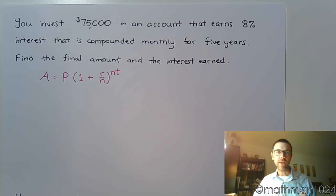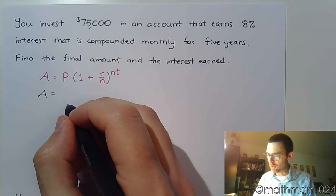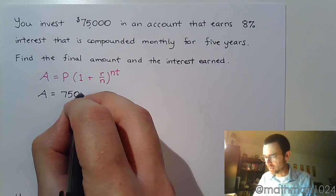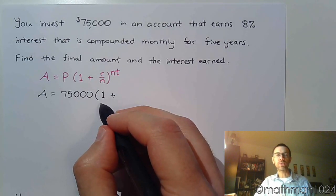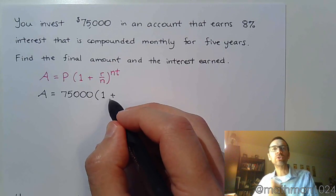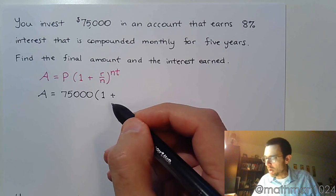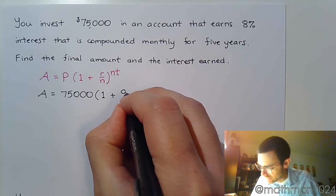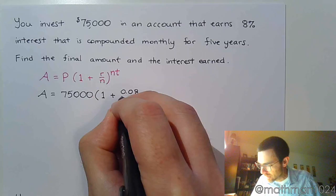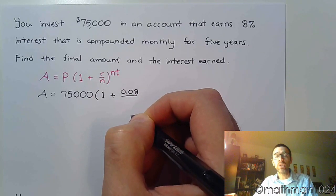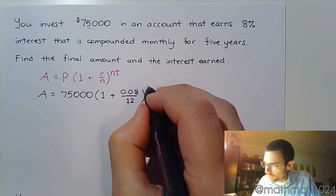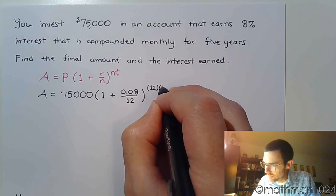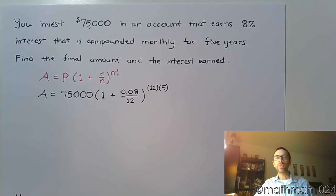So we're going to find the final value first before we can find the interest earned. My final value, A, is based on $75,000 invested and then 1 plus, so remember the 1 is 100%, so you're still going to have $75,000 plus all these little increments that you keep getting from earning interest. My rate is 8%, so we need to write that as a decimal, so 0.08, divided by the number of compoundings per year. So if it's compounded monthly, that means there are 12 months in a year, all raised to the, let's see that's 12, and t is 5 years.